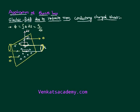Even if I consider a surface area element on the curved surface, its direction is radially outward, and the electric field at that point is also radially outward — both are radially outward. At the curved surfaces, electric flux is E dS cos 90°, which is equal to zero. There is no flux through the curved surface, so we need not measure it.